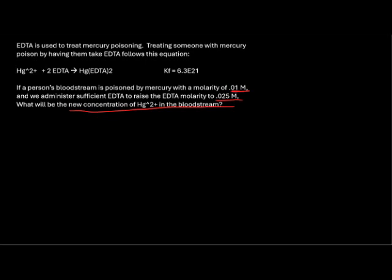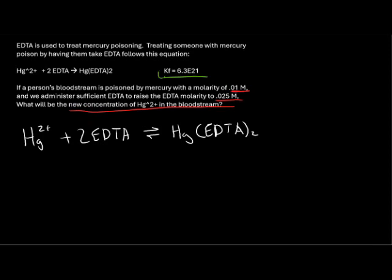We can do this by writing a reaction table. We'll say Hg2+ plus 2 EDTA yields our complex. Note that our Kf value is extremely high, which means this reaction is extremely favorable. Because this reaction is favorable, we can begin by assuming that this reaction goes to completion.